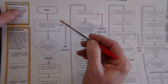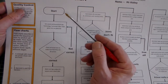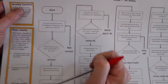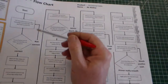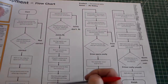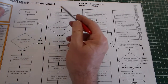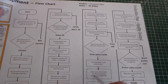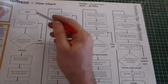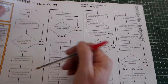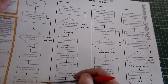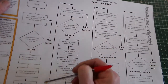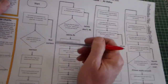Looking at this completed example for an occasional table, the flow chart comes down, loops back up, and continues down again. It's essentially one long flow chart, but we draw a line back up and start again to follow the process in a structured way.